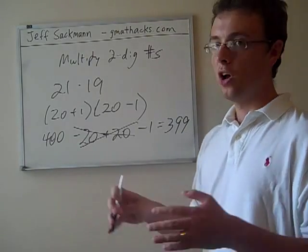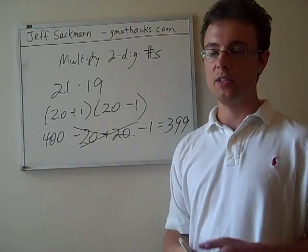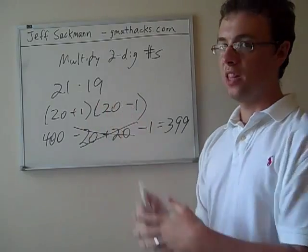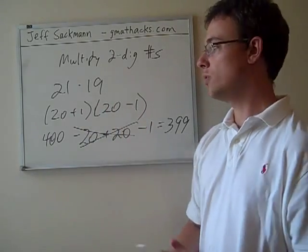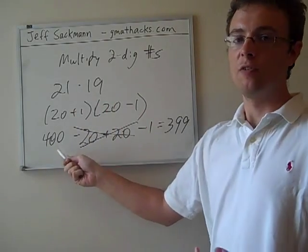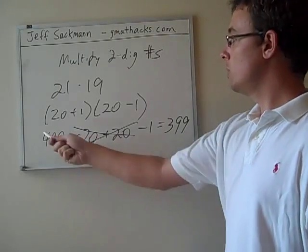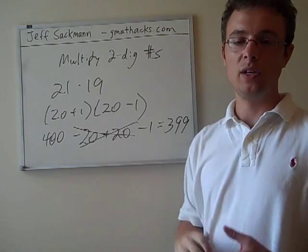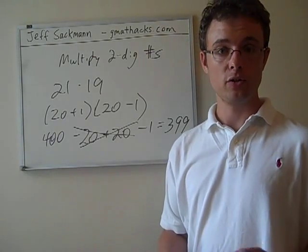A couple simple steps. Every one of those steps is very simple arithmetic, and we've converted from something that would have been more challenging. We're able to approximate from the beginning. 400 is very close. We're able to use tactics from algebra, and very quickly we can get to the precise answer in the case that we do need the precise answer.